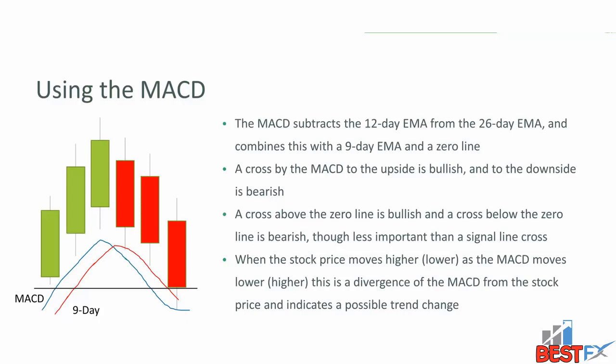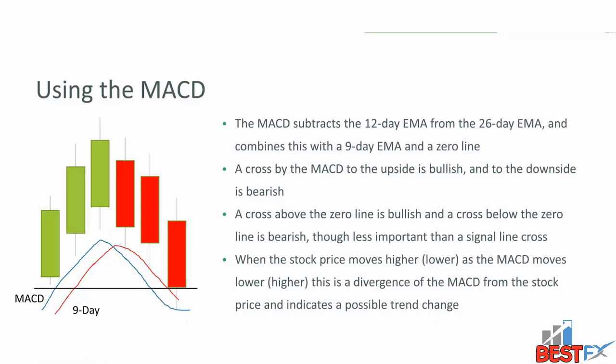A cross in the MACD often indicates a trend change, especially if the MACD is in a bullish position well above the zero line and then crosses the 9-day to the downside — this may indicate that a bullish trend is becoming bearish. Just the opposite in a bearish trend: if the MACD is extremely oversold and then crosses the 9-day to the upside, this may indicate that the bearish trend is turning bullish, or at a minimum turning into a consolidation pattern.